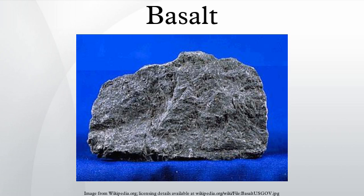Basalt compositions are rich in MgO and CaO and low in CO2 and the alkali oxides (Na2O + K2O), consistent with the TAS classification. Basalt generally has a composition of 45–55 wt% SiO2, 2–6 wt% total alkalis, 0.5–2.0 wt% TiO2, 5–14 wt% FeO, and 14 wt% or more Al2O3. Contents of CaO are commonly near 10 wt%, and MgO commonly in the range 5–12 wt%. High alumina basalts have aluminium contents of 17–19 wt% Al2O3. Boninites have magnesium contents of up to 15% MgO.